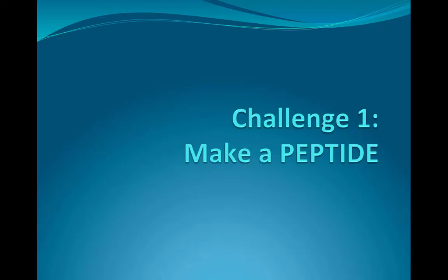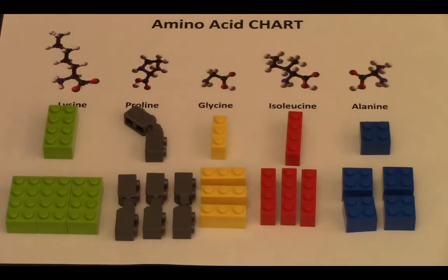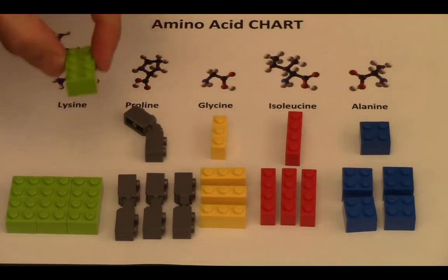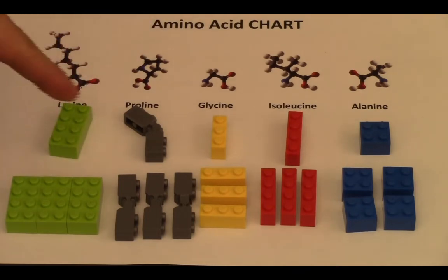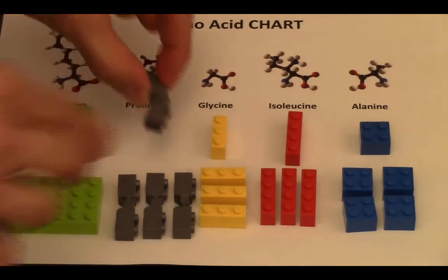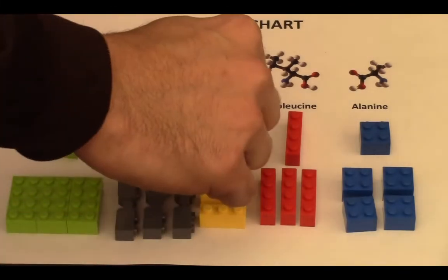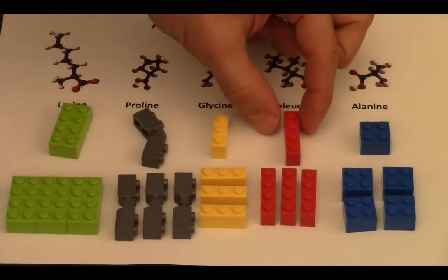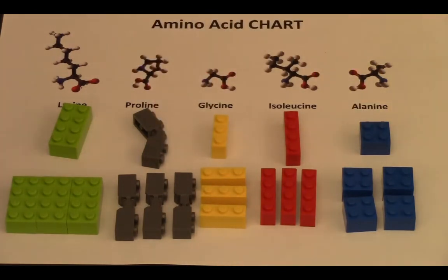Now that my students had a basic understanding of how to make a protein, it was time to use Lego to solidify that understanding. Challenge one: make a peptide. I start by asking the students to use the following Lego pieces as analogies for five different amino acids. You have lysine, which is green and long and thin. You have proline, which is a bendy amino acid. You have glycine, which is a small one. You have isoleucine, which is long and thin again. And you have alanine, which is a block-like amino acid.